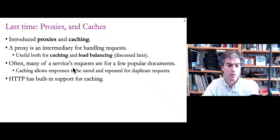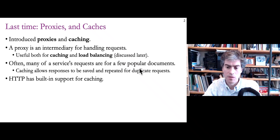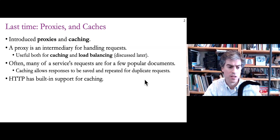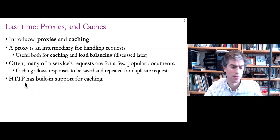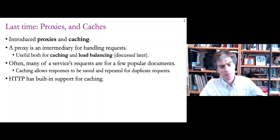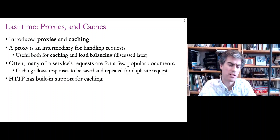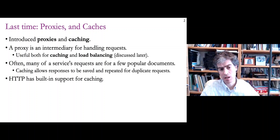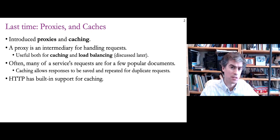A caching proxy layer in front of your application is generally useful if you have a service where a few popular documents are very popular — you can handle those with the caching layer up front. HTTP, the protocol for web browsers to interact with web servers, has built-in support for caching, and we can also apply that same caching layer to REST services, which are also built on top of HTTP.